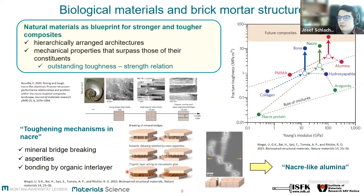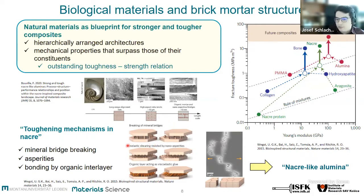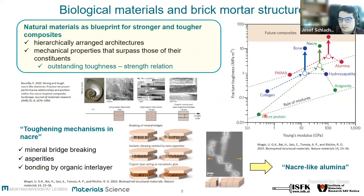Natural materials such as wood, bones, and nacre all have in common that they are hierarchically arranged from macro to microscale. If you take a look at nacre, there are several toughening mechanisms at different length scales. Going inside the microstructure, we can see that the calcium carbonate platelets are connected with mineral bridges, asperities, and also the organic layer already mentioned. All these have an effect on toughening during fracture at the microscopic level, together with macroscopic platelet pull-out, which enhances the fracture energy. The fracture toughness of nacre is much higher than its constituents—calcium carbonate and the organic layer. There is much research done in making nacre-like alumina.